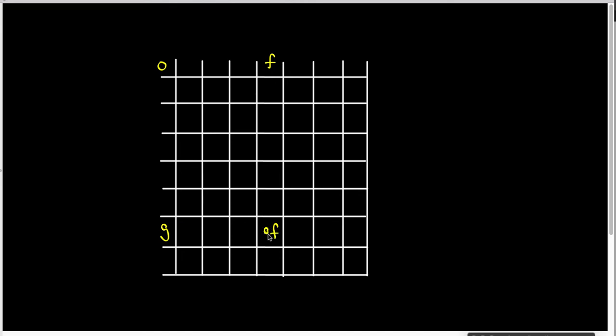So in reading these tables, it's always going to be first do the thing in the column, and then do the thing in the row.